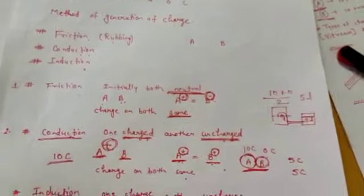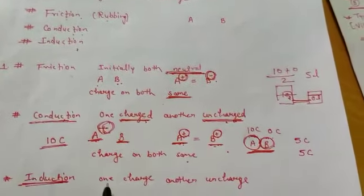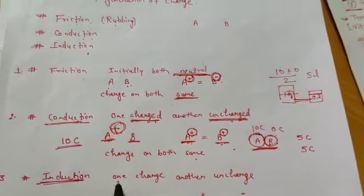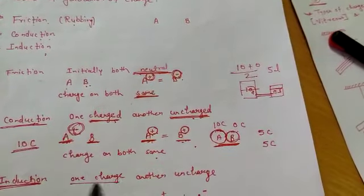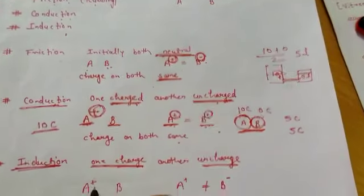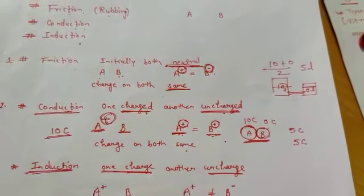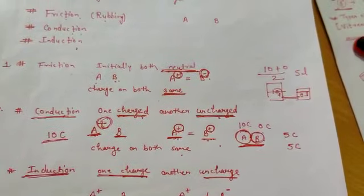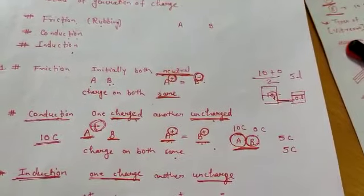The third method is induction. The meaning of induction is inspiration — getting something from someone by observation. Here also initially one body is charged and one is uncharged. Body A is charged and body B is uncharged. In induction, we do not need to touch the two bodies. In the first method we rubbed and touched; in the second we only touched; here no touching is required.